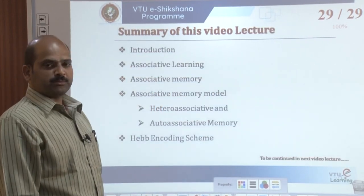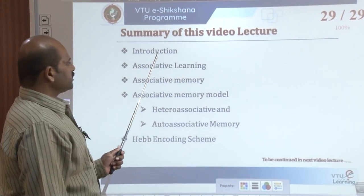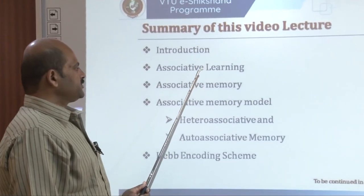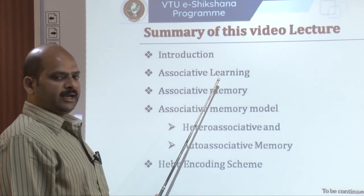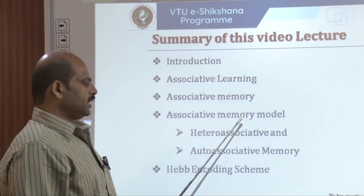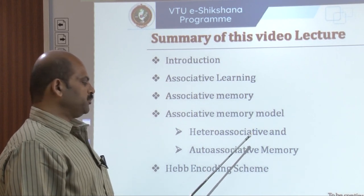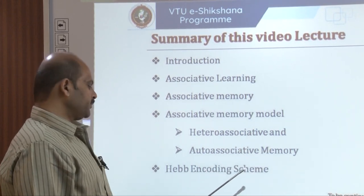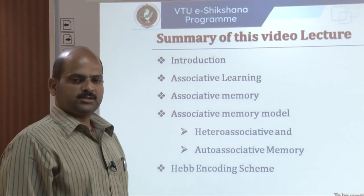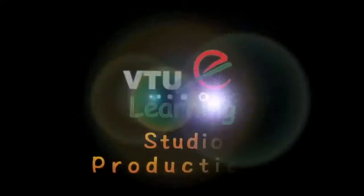To summarize this video lecture: we covered the introduction of attractor neural networks, associative learning, associative memory, memory models, types of associative memory — hetero-associative and auto-associative memory — and finally Hebb's encoding scheme. This video is going to continue. Thank you.